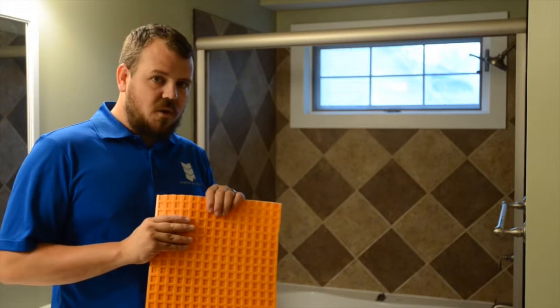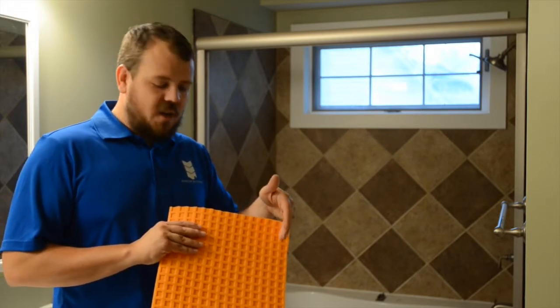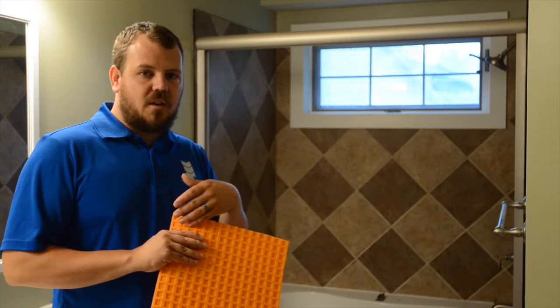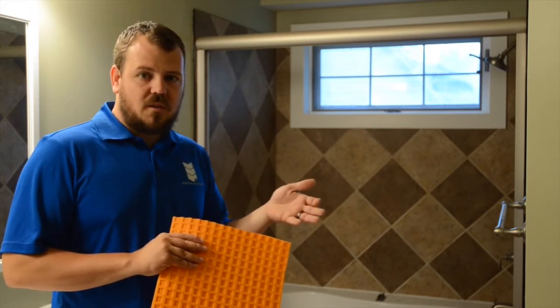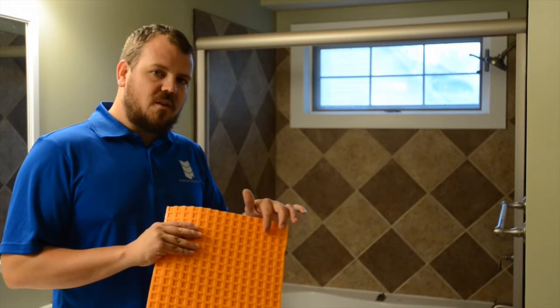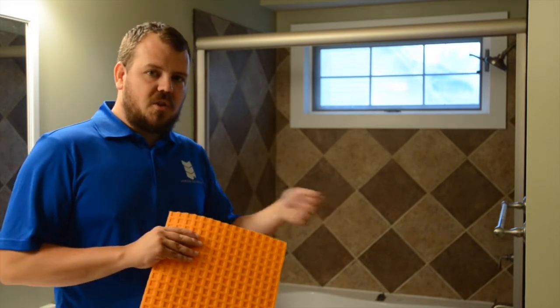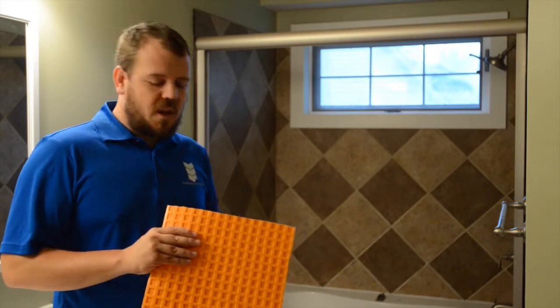And then when we're using small tile, we do a day-before scratch coat where we completely fill all these voids. Then we come back and lay our tile the next day as we would over anything else that's flat. Because we don't want our little tile to sink down into any of these spaces. But if we're using a large tile, we just scratch coat it and then go ahead and lay right over top of it.